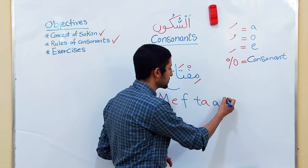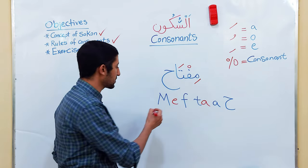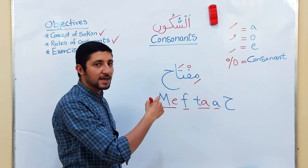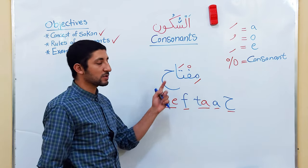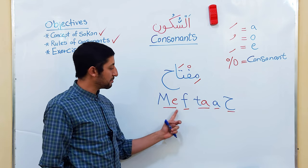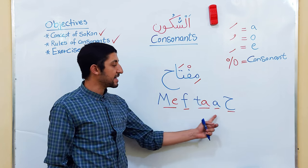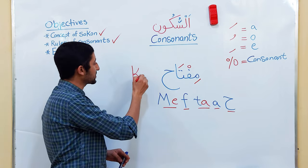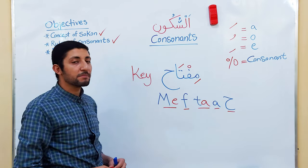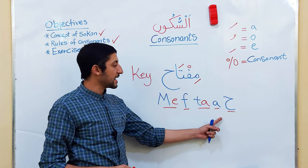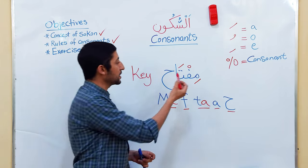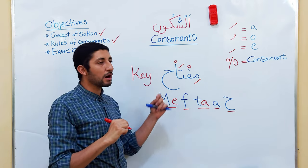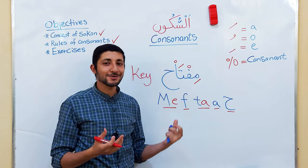Let's read them all together: Mi-F-Ta-A-H — Miftah, meaning 'key' in English. Some people pronounce it differently, but this is the correct pronunciation: Miftah. Notice here we have two consonants: the A is originally consonant and this last one, Ha, is temporarily consonant because we are stopping here. The A and the other originally consonant letter were originally consonant, but Ha is only temporarily consonant at the point of stopping.